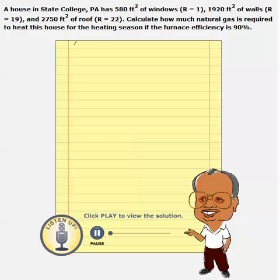In problem 4.6, this is a little bit involved in terms of solving. We are trying to calculate the total heat loss from a house with different surfaces — windows, walls, and the roof. Once we get the total heat that is lost, that is the heat that we have to buy, based on the furnace efficiency of 90%. So we need to calculate heat loss through each of these surfaces: windows, roof, and walls.